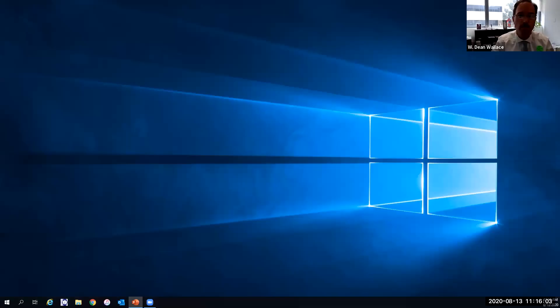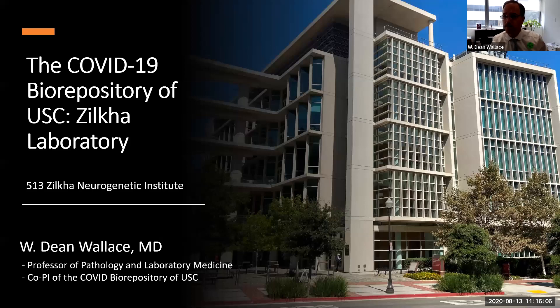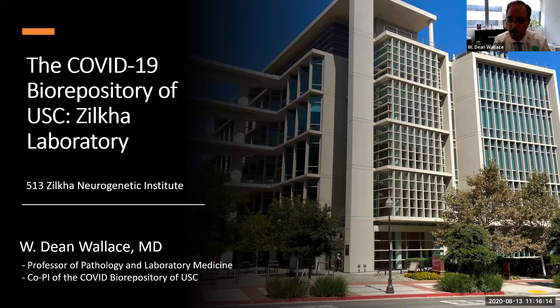Thank you very much, Camilo. I'm a pulmonary renal pathologist. I'll briefly talk about the Zilka laboratory space for the Biorepository. The laboratory is located on the fifth floor of the Zilka Neurogenetic Institute and has a total space of approximately 850 square feet. It's a BSL-2 plus grade laboratory with sufficient space and equipment for routine whole blood processing, plasma, serum, and other fluids, including storage of various frozen tissue specimens in multiple freezers.